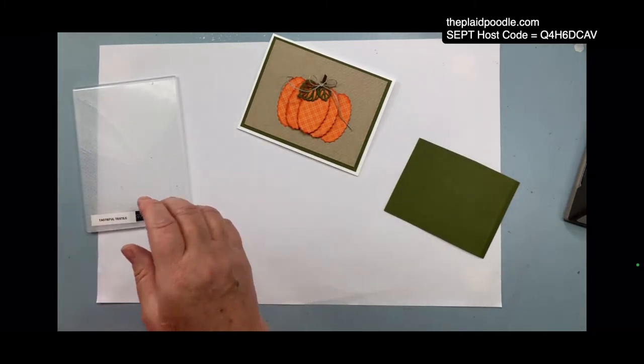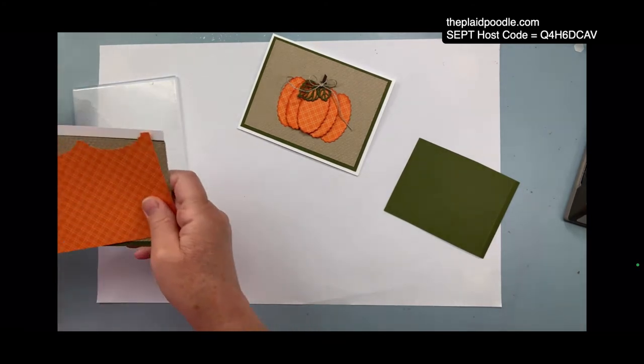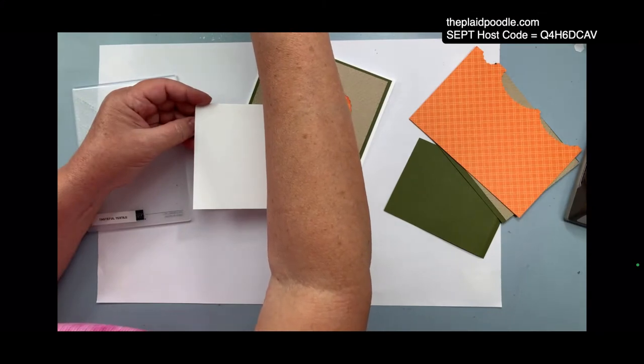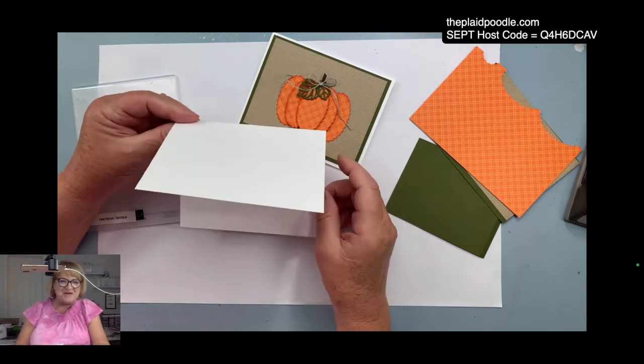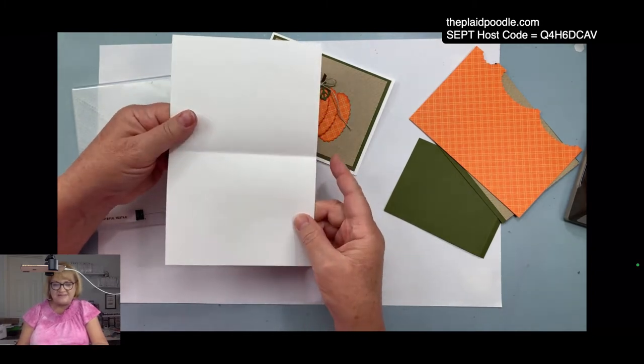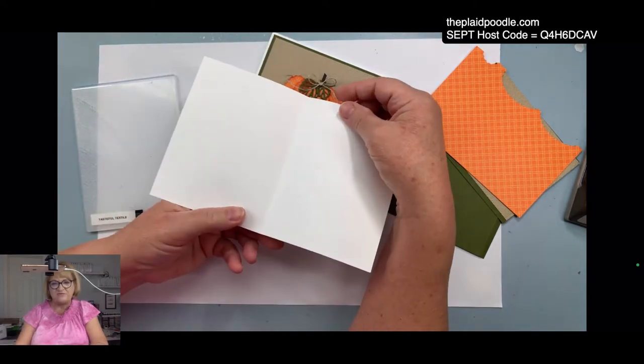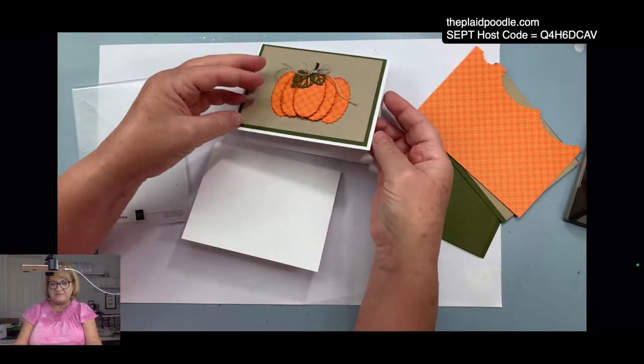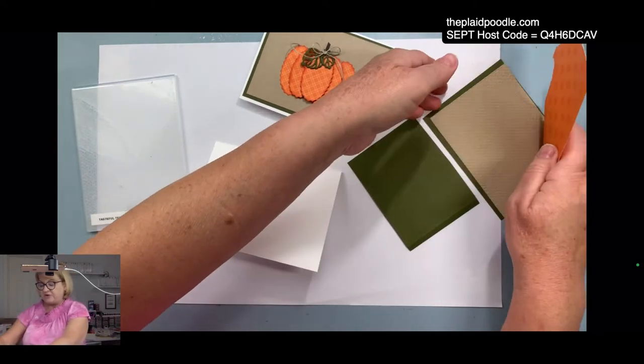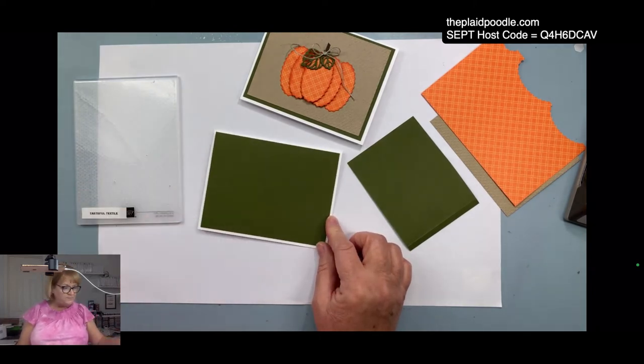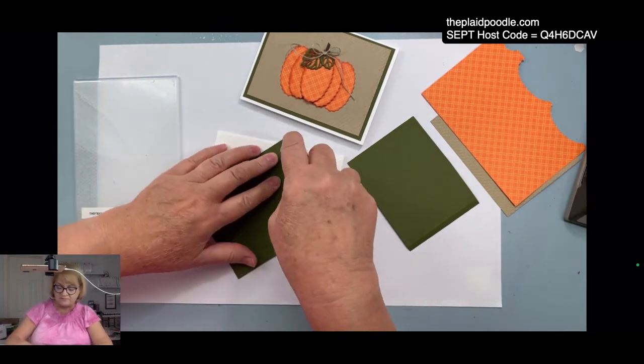I started with a base of the basic white thick cardstock that's eight and a half by five and a half. I scored it at four and a fourth and folded it in half to make an A2 card. That is going to be our card base. The first layer on our card is a piece of five and a fourth by four mossy meadow and we will just quickly adhere that onto our card base card front.